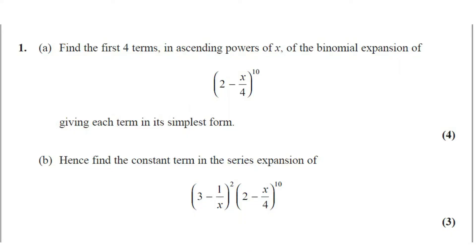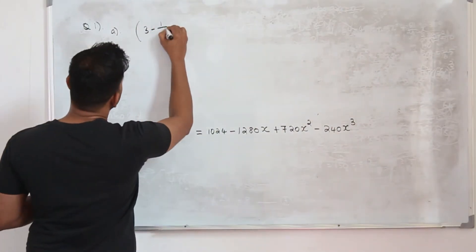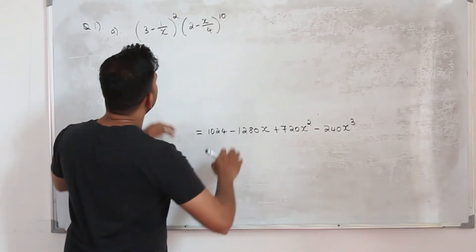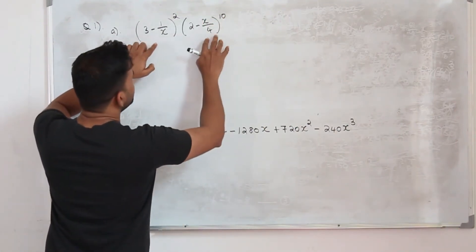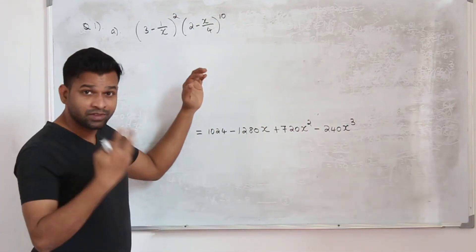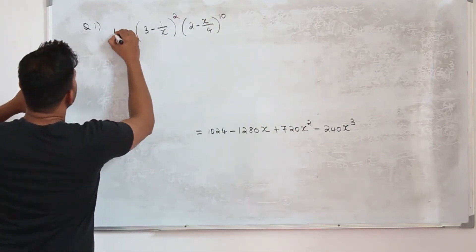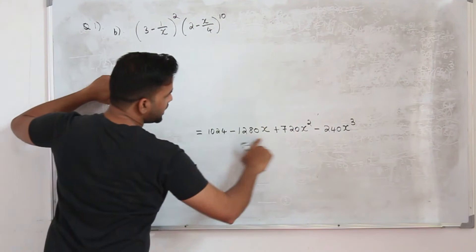Now part b. Hence find the constant term in the series expansion of (3 - 1/x)^2 times (2 - x/4)^10. The question carries three marks. They want you to find the constant term in this expansion, the constant term, the term independent of x, the term without x. In part a we already got the expansion, the first four terms of this expansion, so we are going to use this.